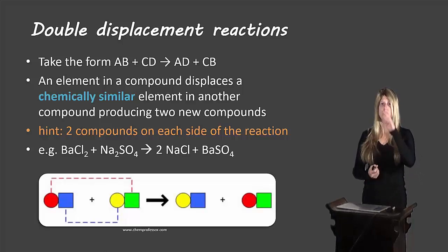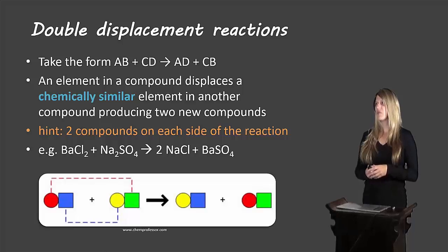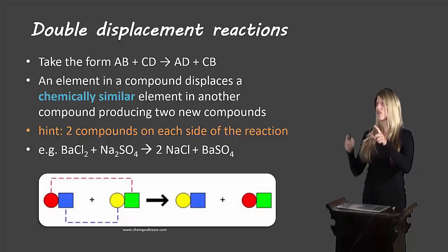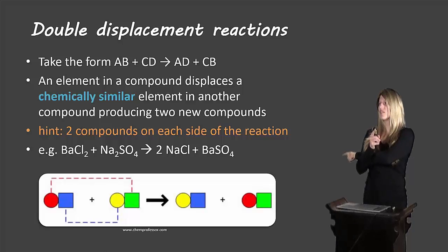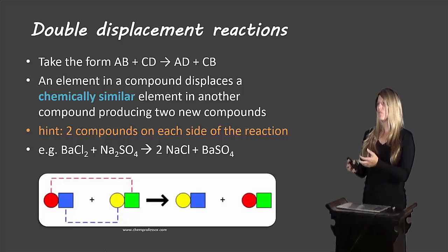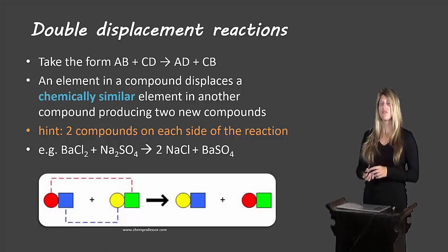Here's an example. We can identify this as double displacement because we have barium chloride — one compound — and sodium sulfate, another compound. We can see the chlorine and the sulfate swap places. So the sodium is no longer with sulfate; it's now with chlorine. And the barium is no longer with chlorine; it's now with the sulfate.